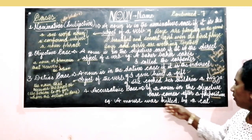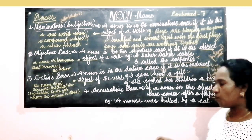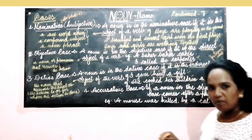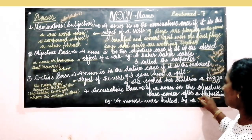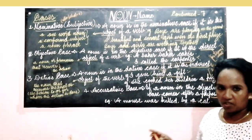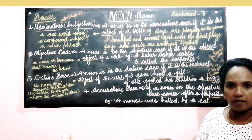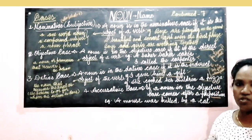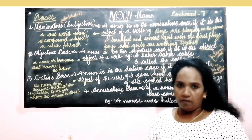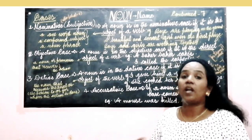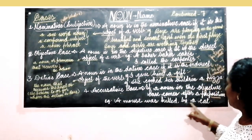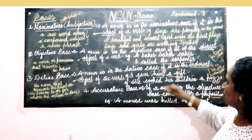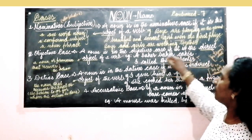For example: A mouse was killed by a cat. Here, a cat is the agent, shown with by — that is a preposition. So this is called an accusative case. The real sentence would be: A cat killed a mouse. But here a preposition is used to show the agent. Similarly: I write with a pen — a pen comes after the preposition with. Another example: I called the carpenter becomes The carpenter is called by me.